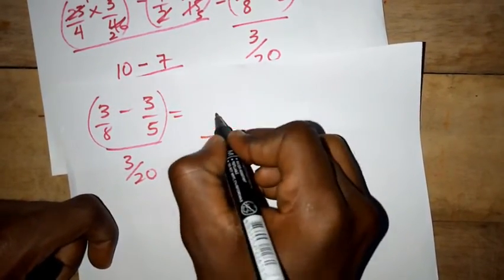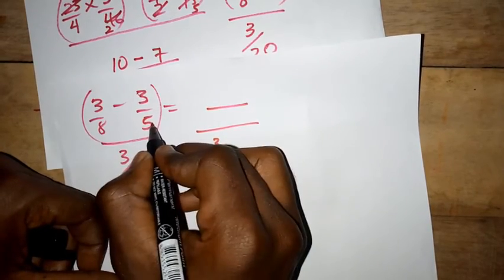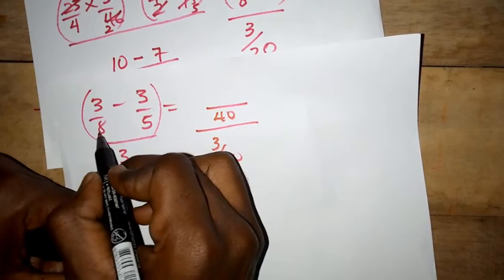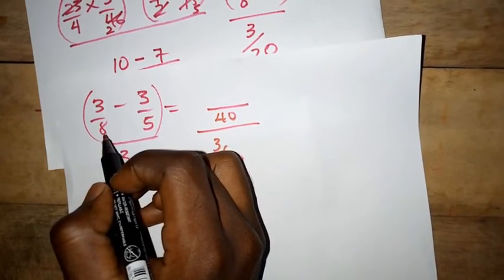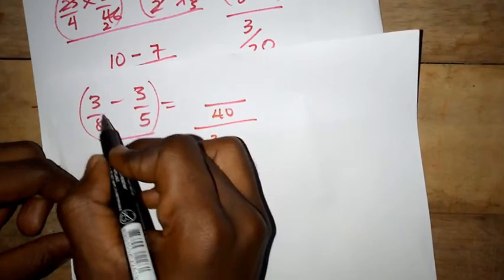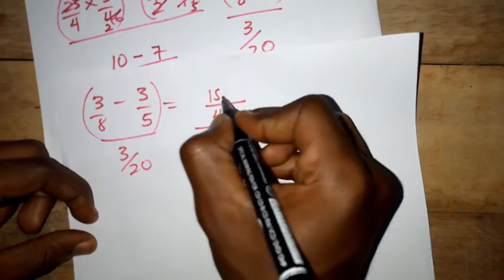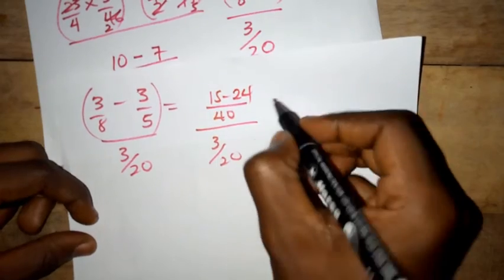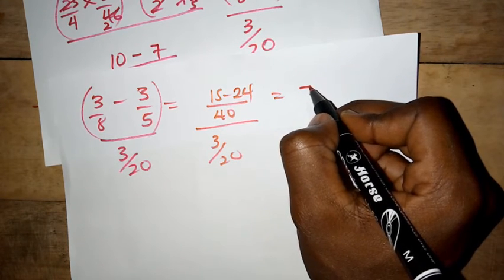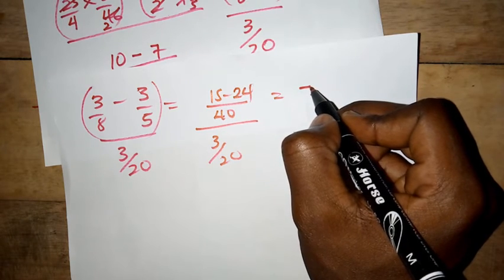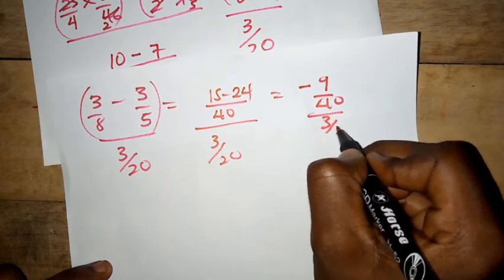The LCM of 8 and 5: 8 times 5 is 40, so the LCM is 40. 40 divided by 8 is 5, and 5 times 3 is 15. Then 40 divided by 5 is 8, and 8 times 3 is 24. So we have 15 minus 24, which is negative 9. Therefore we have negative 9 over 40, divided by 3 over 20.